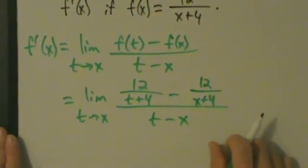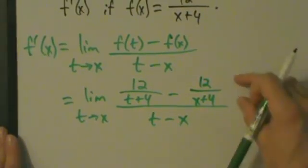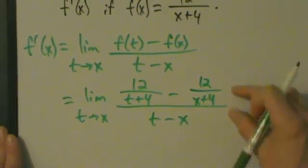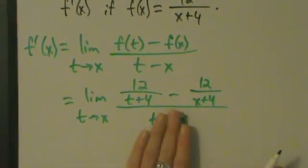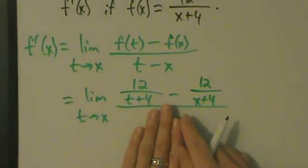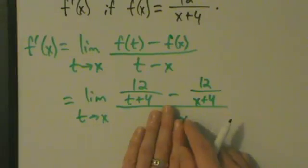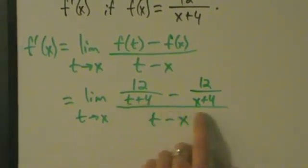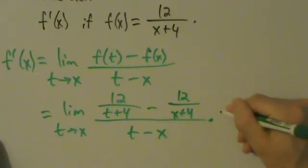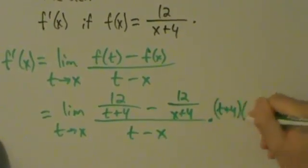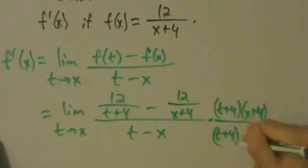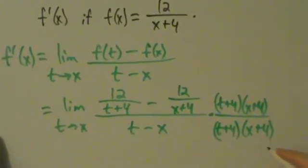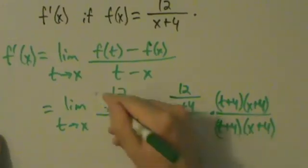The next step — we see we have a complex fraction. There's a big top and a big bottom, and inside the big top we have another top and another bottom. What we can do is ignore the big bottom and get a common denominator on the top. The denominators are t plus 4 and x plus 4, so let's multiply the big top and the big bottom by t plus 4 times x plus 4. We have to be careful and put parentheses around here.